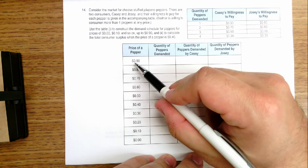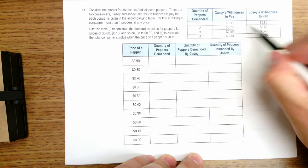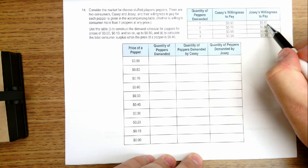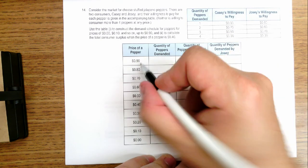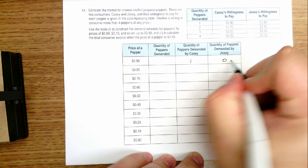So we look and say, if the price is $0.90, is Casey willing to buy a pepper? The answer is yes, she's willing to pay $0.90. Is Josie willing to pay $0.90? The answer here is no. The maximum price Josie's willing to pay for a pepper is $0.80. So if the price were $0.90, there would be one pepper demanded by Casey, none by Josie, one total.